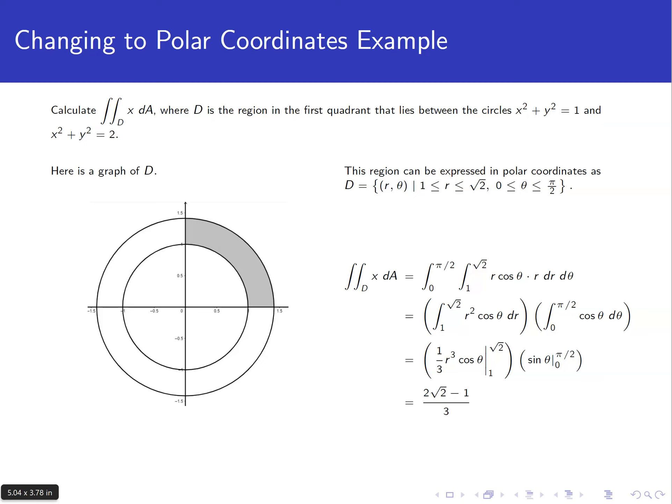So let's say we have the double integral over D of x dA, where D is the region in the first quadrant that lies between the circles x squared plus y squared equals 1 and x squared plus y squared equals 2.